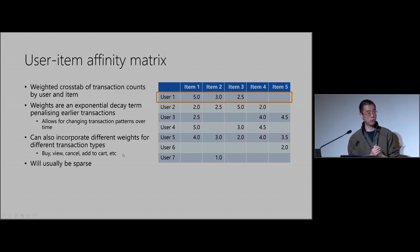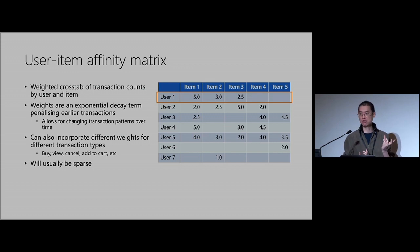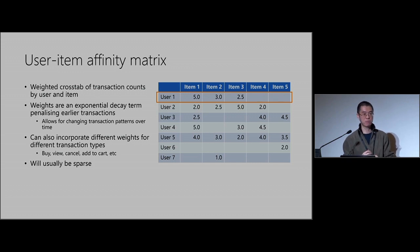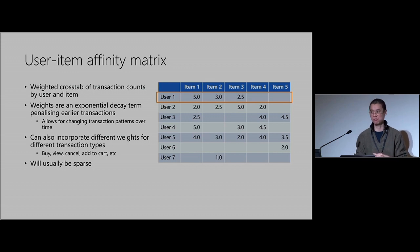A nice feature is that the weights include an exponential decay term, which allows you to capture changing patterns of behavior. So maybe a movie was really popular five years ago but has completely dropped off the radar since then. Or fidget spinners are big now, but no one will know what they are in ten years' time — you can basically down-weight older data without necessarily throwing it away altogether.